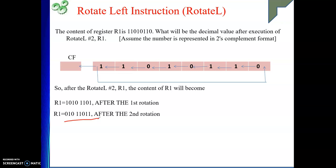Now they have asked for the decimal value. We first decide whether the result is positive or negative. Since the MSB is 0, it is a positive number. So we simply find the decimal of the corresponding binary. The binary gives us 2 + 1 + 8 + 16 + 64, which equals positive 91. This is our answer. Any bit pattern given — rotate it and find the decimal the same way.